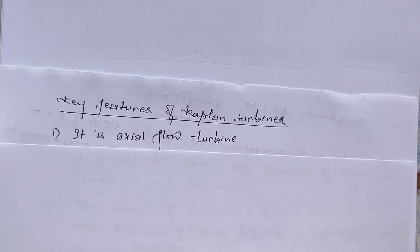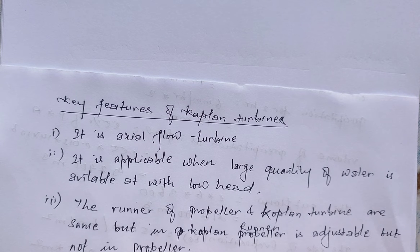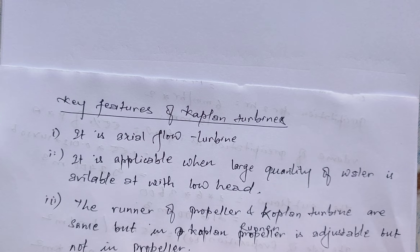It is an axial flow turbine. It is applicable when large quantity of water is available with very low head. The runner of propeller and Kaplan turbine are the same, but in Kaplan the runner is adjustable, but not in the propeller.